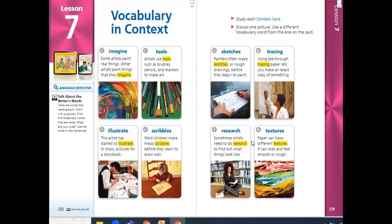Textures. Paper can have different textures. It can look and feel smooth or rough. For example, also the texture of a t-shirt is different from paper or wood, so every material or everything has its own texture.